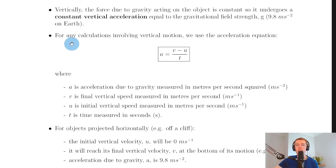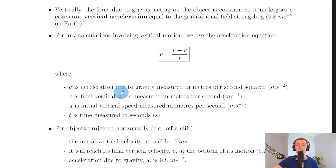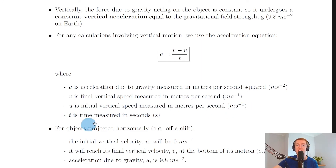Because we have this constant vertical acceleration, for any calculations involving the vertical motion of a projectile we use the acceleration equation a equals v minus u over t. Here, a is acceleration due to gravity measured in metres per second squared, v is the final vertical speed in metres per second, u is the initial vertical speed in metres per second, and t is time in seconds.